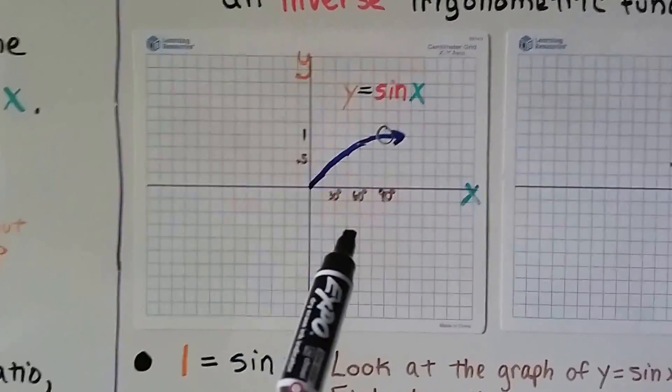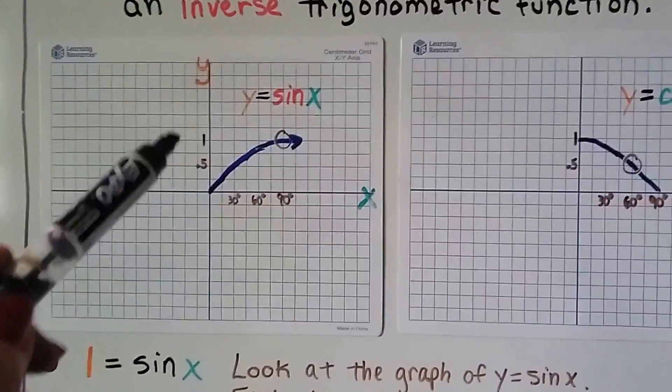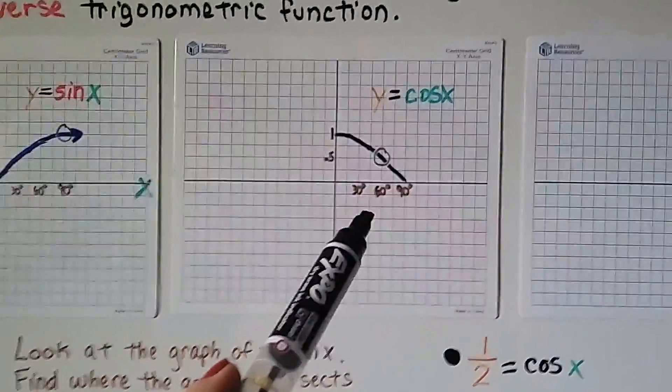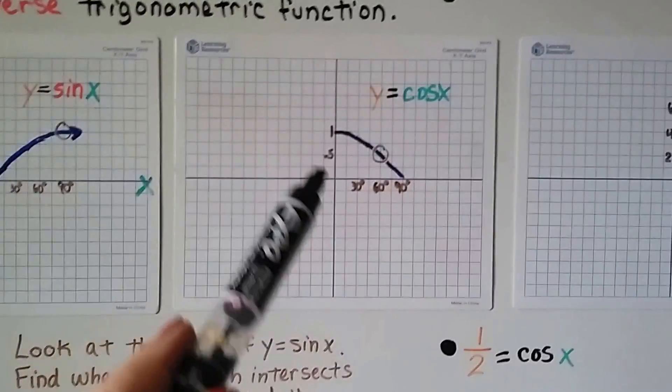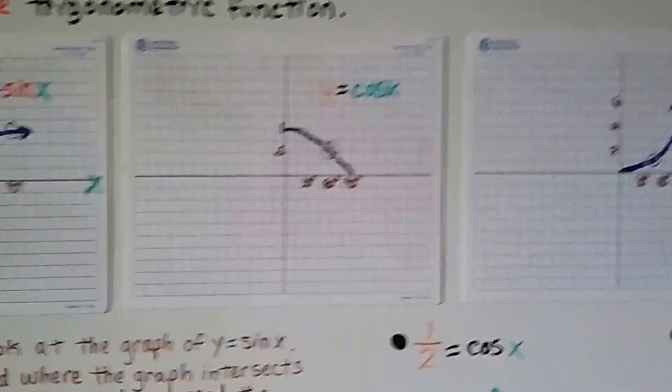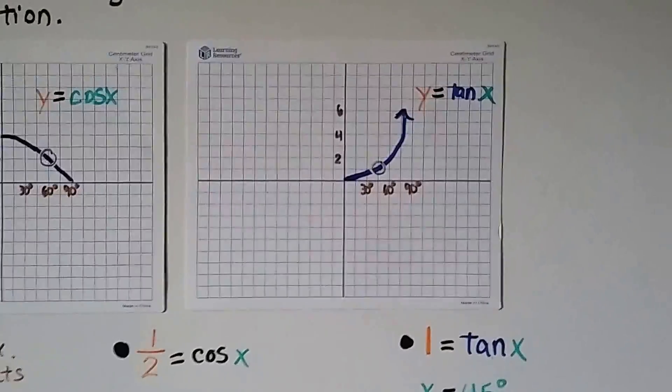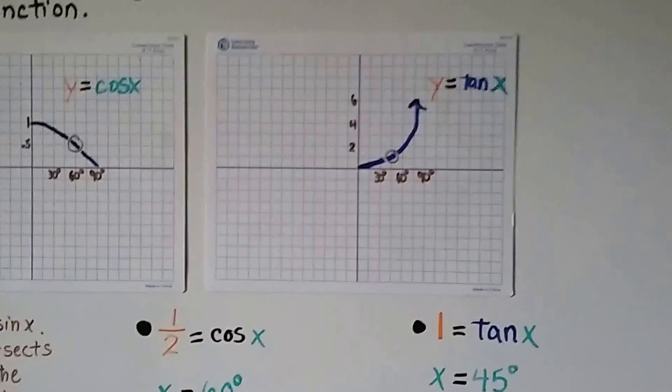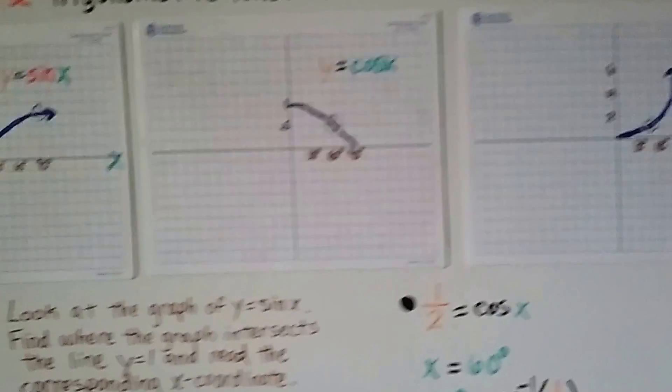We've got y equals the sine of x. It's got a 0.5 and a 1 and a 30, 60, 90 degrees. We've got a y equals the cosine of x, 0.5, 1, 30, 60, 90 degrees. And this one is y equals the tangent of x. This goes 2, 4, 6 and has 30, 60, 90 degrees down here on the x-axis.